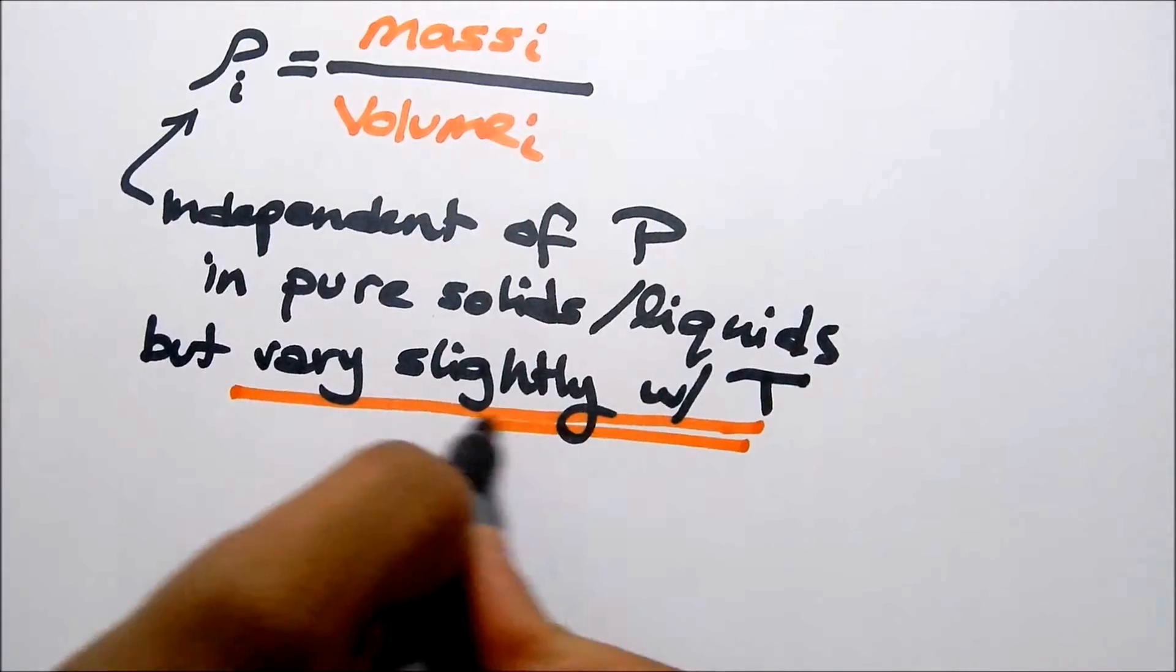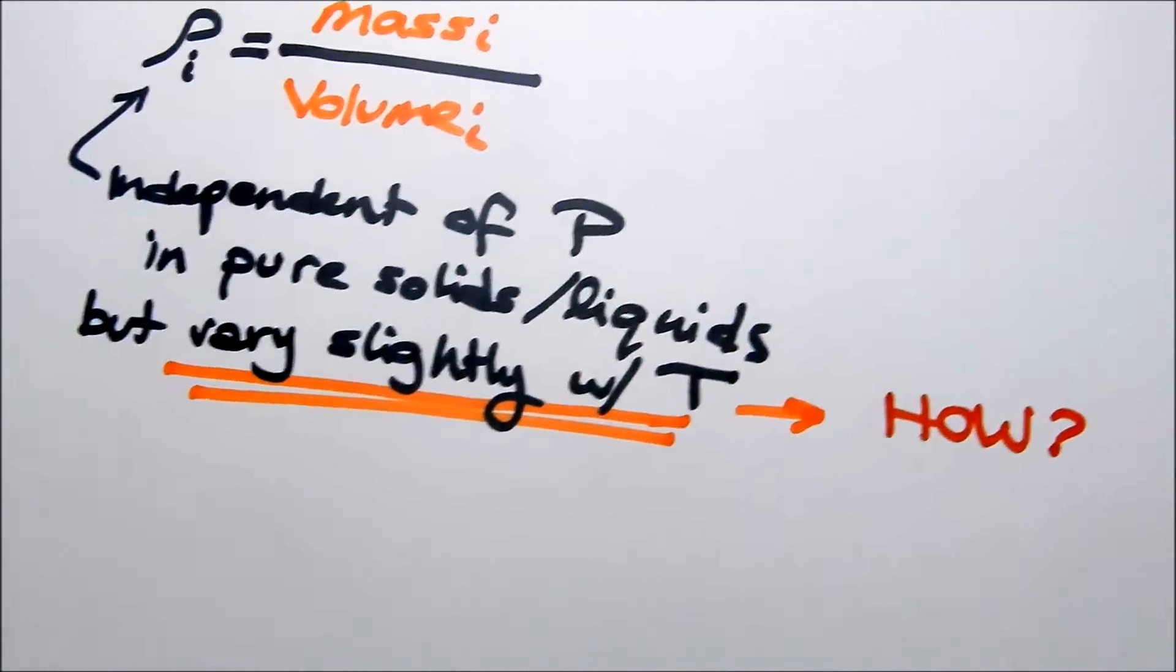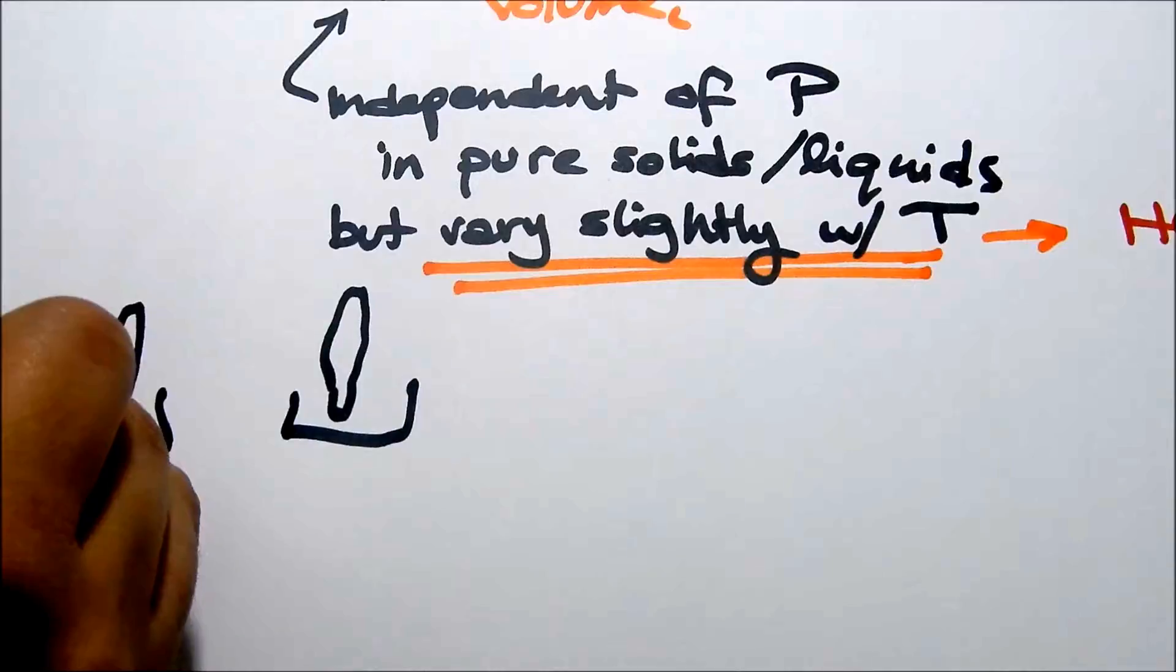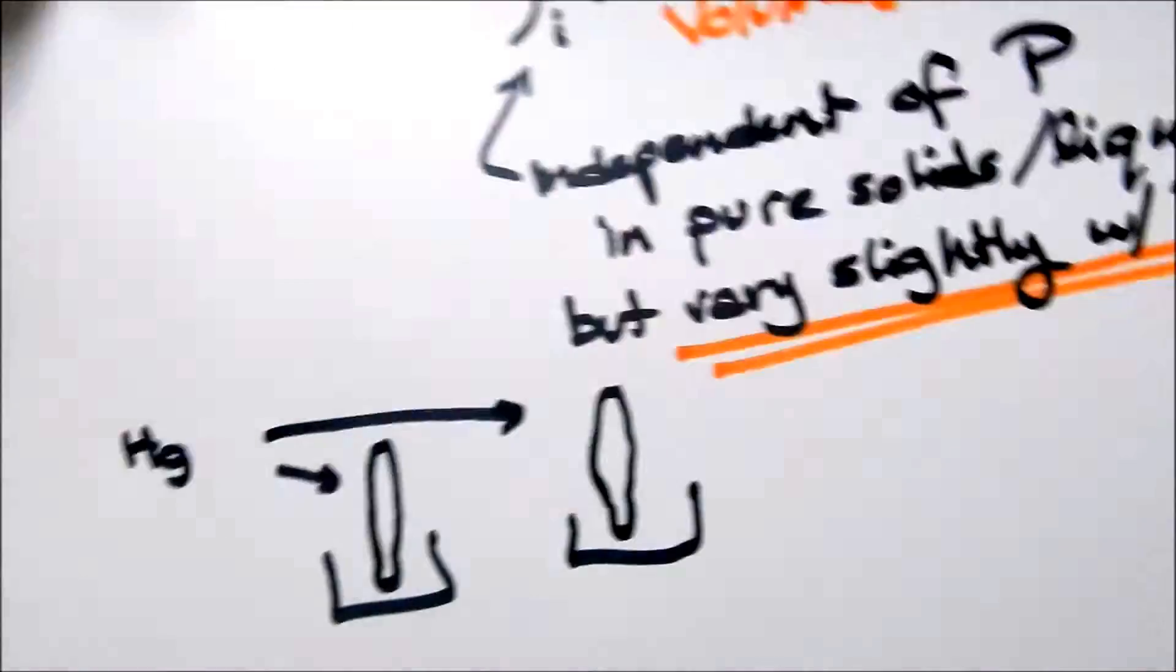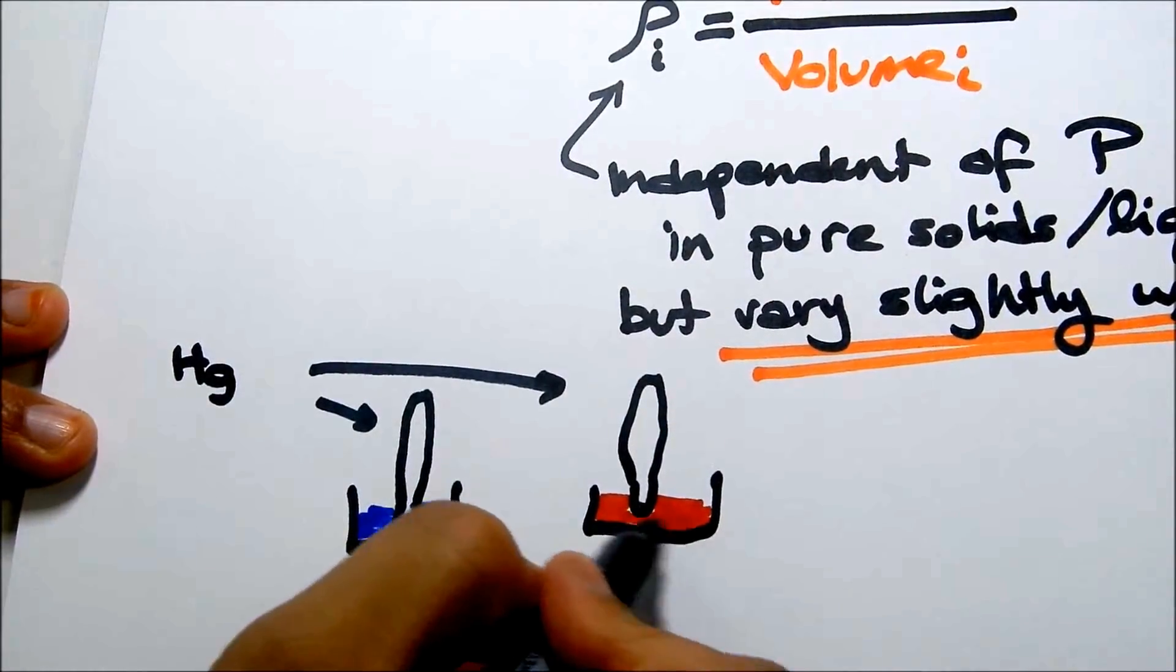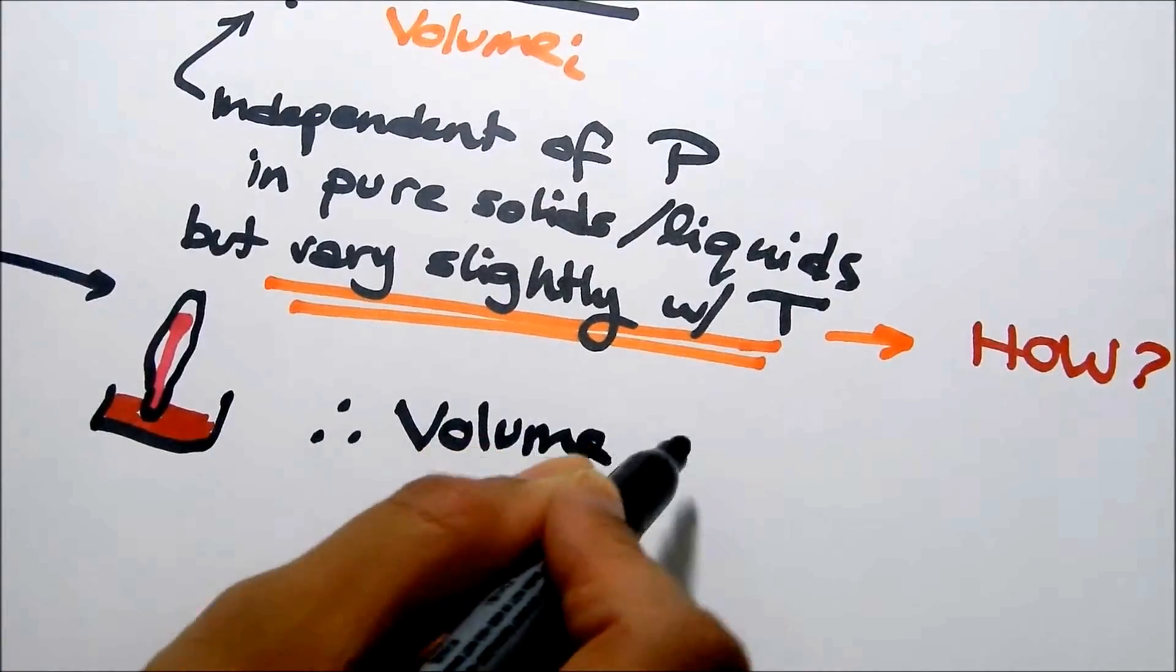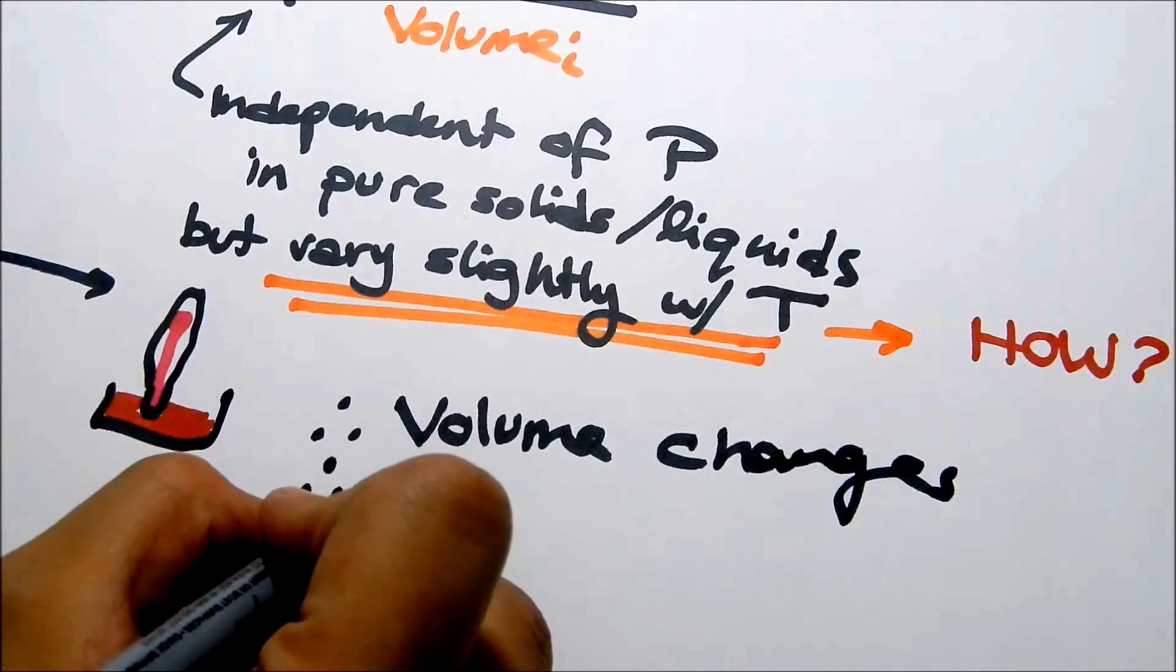But it varies slightly with temperature. And this is really important. So if you have a beaker with a thermometer, a mercury thermometer, one of them is cold and the red is a hot substance or hot water. So as you can see, the mercury will be less in the cold and it will go up due to thermal expansion. So that means that the volume changes, that also means that the density also changes.